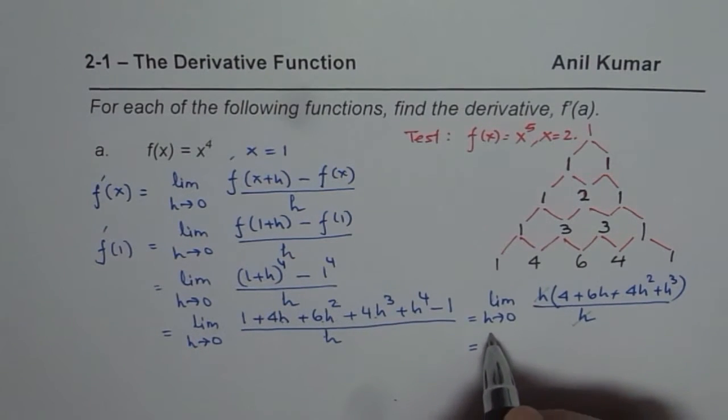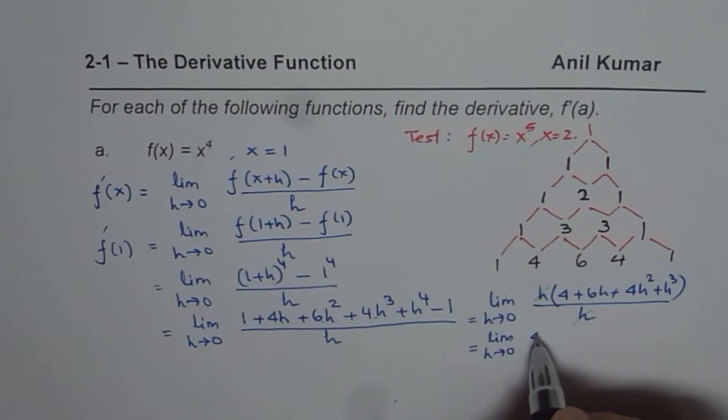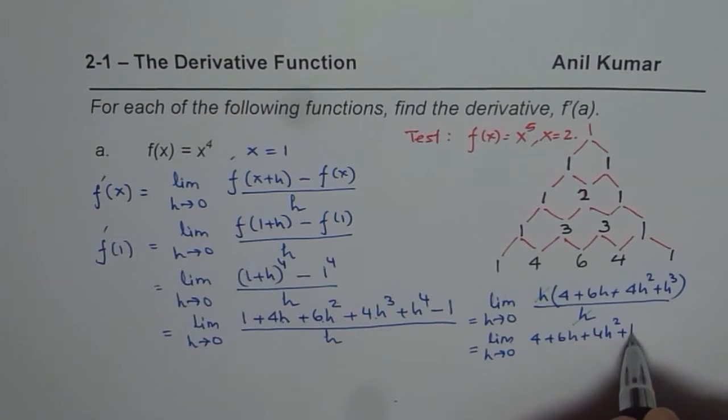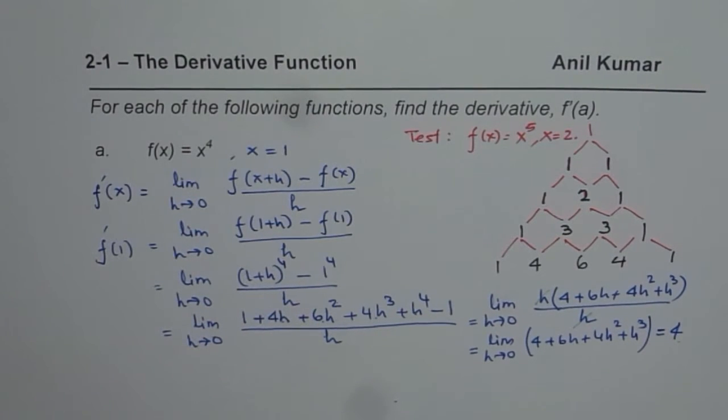So let me first write this as limit h approaches 0. And what we have is 4 plus 6h plus 4h squared plus h cubed. Now if I substitute 0, I get 4.